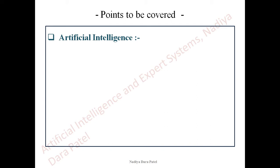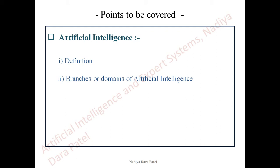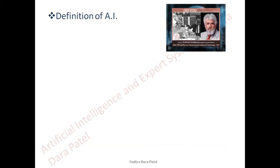Artificial Intelligence has become one of the vital parts of trending development in technology and is taking over every field. It is not restricted to computer science only, but is making its grip into every possible business and branch. The points we are going to study today are the definition of artificial intelligence and some branches or domains of AI.